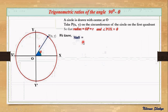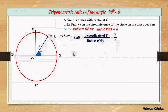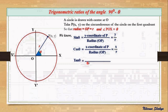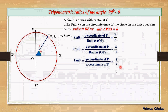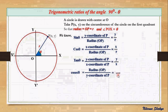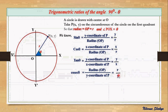In our previous class we defined sine theta as the ratio of the y-coordinate to the radius, so sin θ = y/r. Similarly, cos theta is defined as the x-coordinate by radius, x/r, and tan theta is defined as the ratio of the y-coordinate to the x-coordinate, y/x. Also, cosec theta is the ratio of the radius to the y-coordinate, r/y — which is the reciprocal of sin theta.